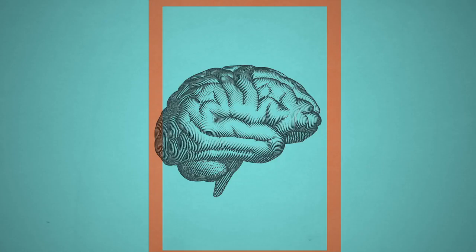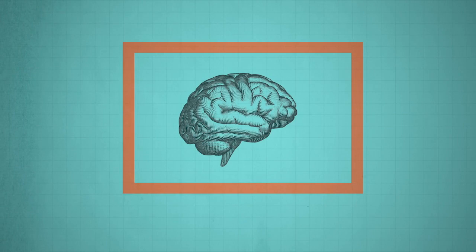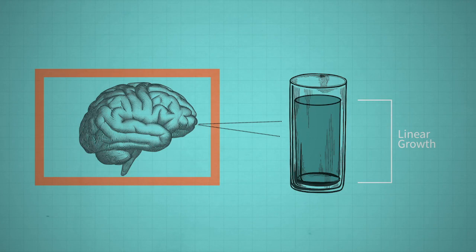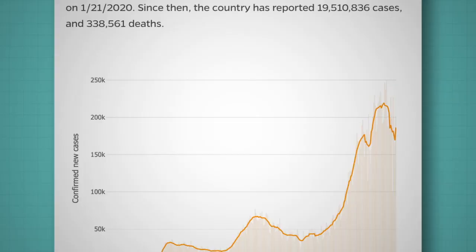What our brains want to do is translate an exponential growth process into something like a glass of water filling up — things that grow at a constant rate over time. So what our brains do is take a few samples from the recent history and try to extrapolate from that. So when we're looking at exponential growth processes like a pandemic, that leads us totally astray.